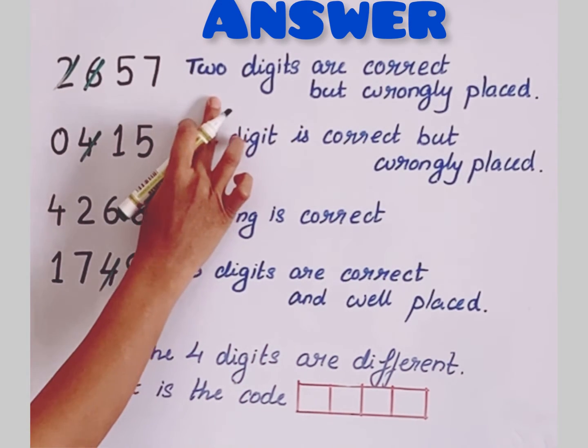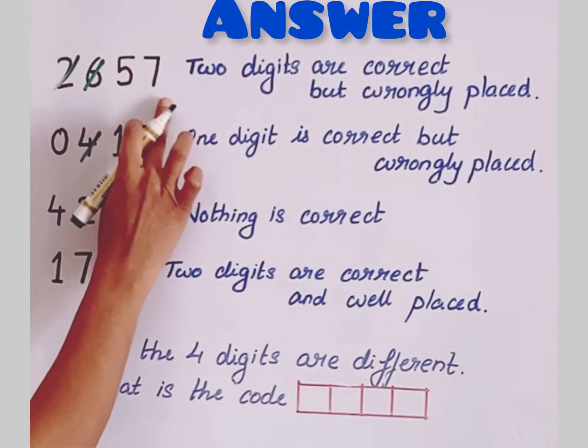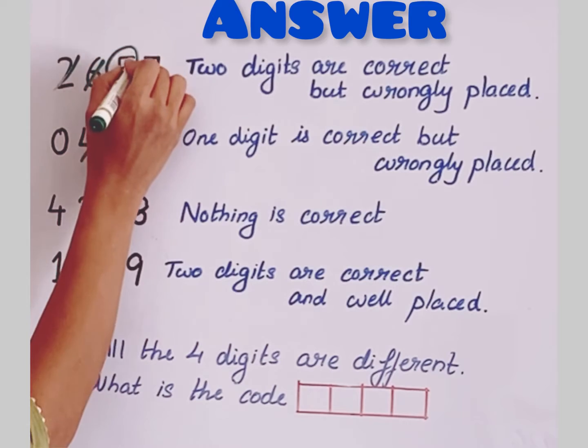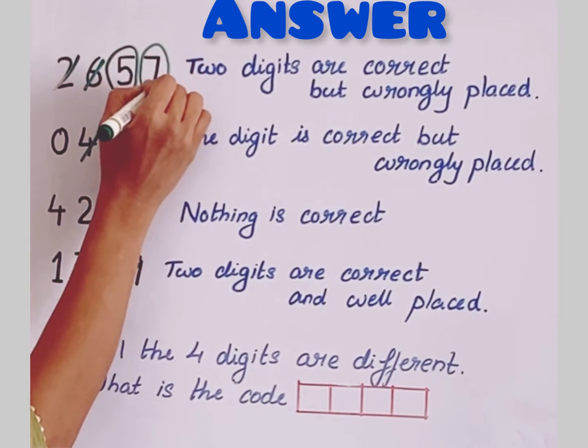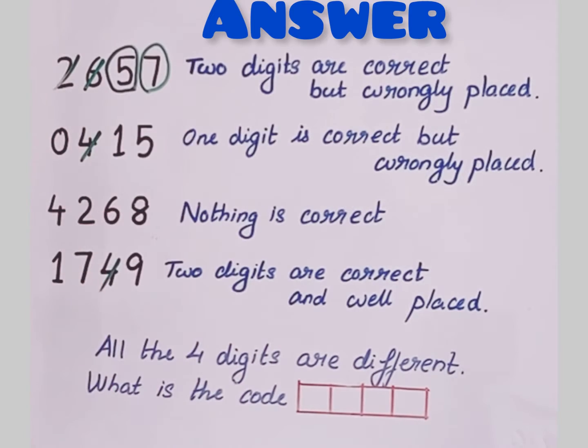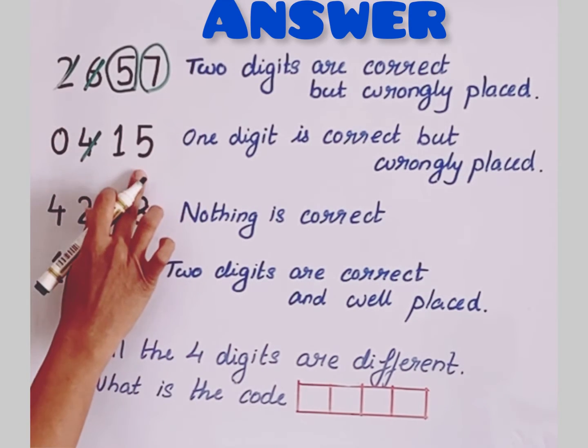Let's move on to this clue which says that two digits are correct, so they are 5 and 7, and they are wrongly placed. So let's place 5 and 7 later. Now let's move on to this clue here.